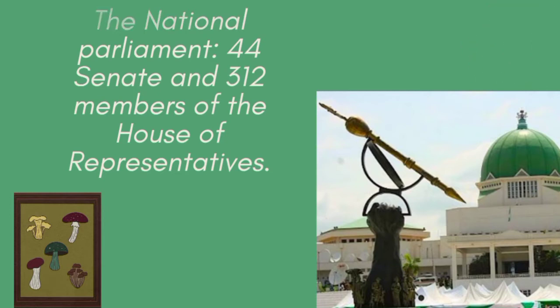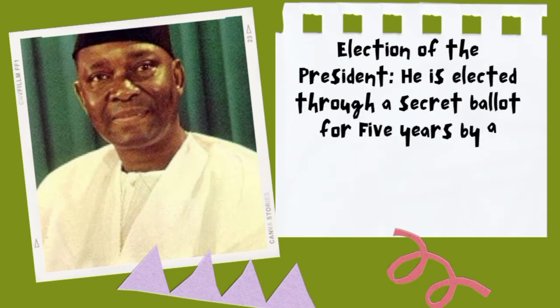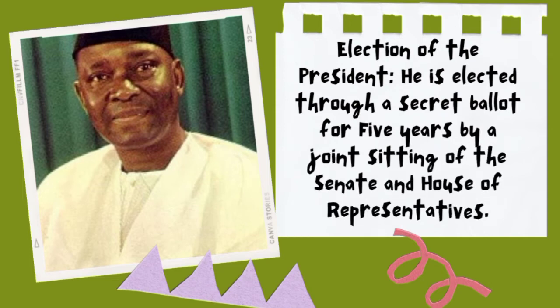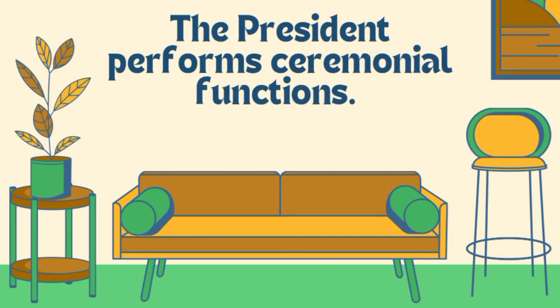The constitution also made provision for the election of the president. The president is elected through a secret ballot system for five years by a joint sitting of the Senate and the House of Representatives. The election is conducted within the national parliament by its members. The president carries out certain ceremonial functions as head of state.